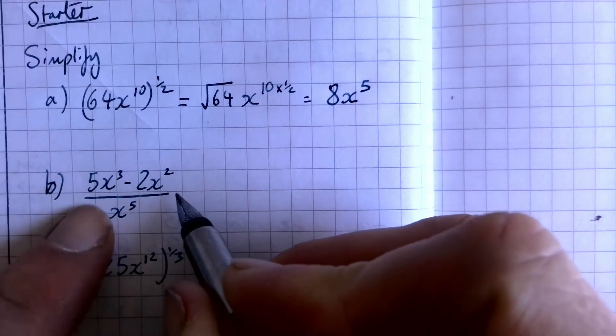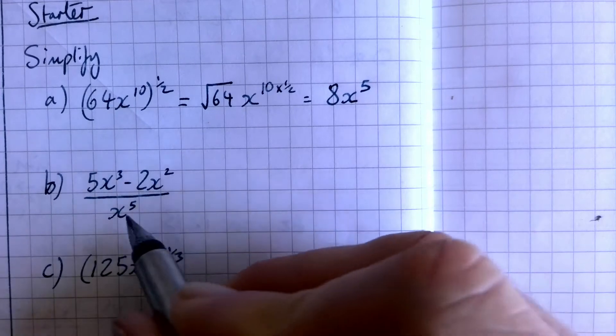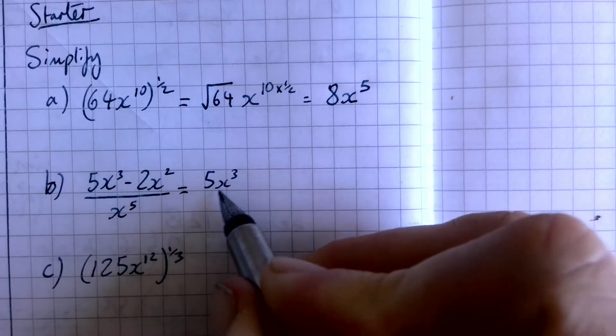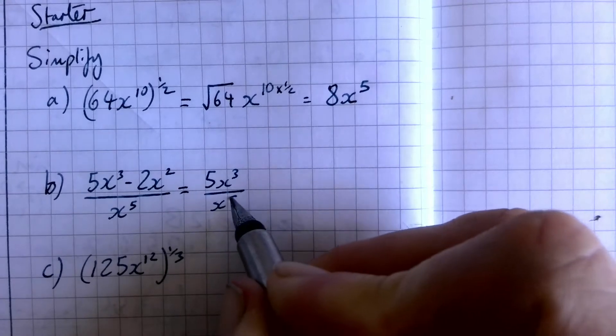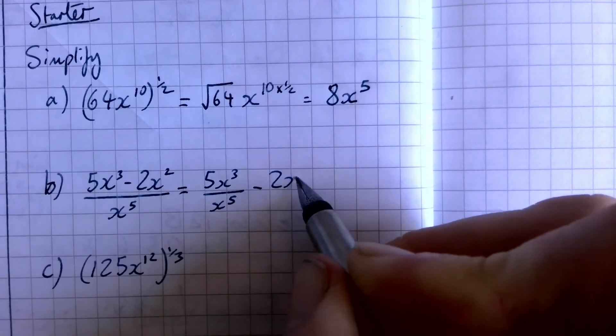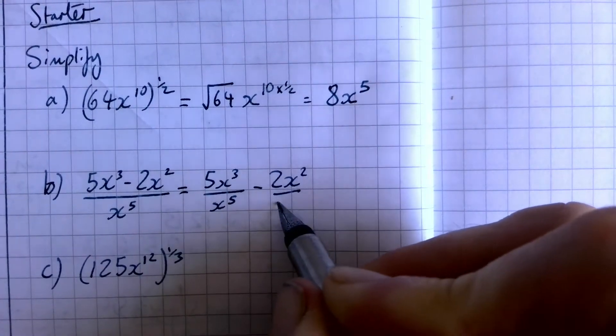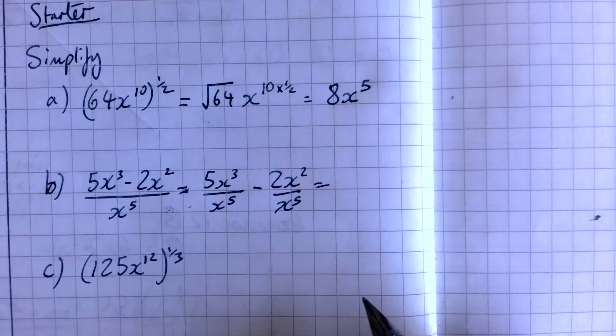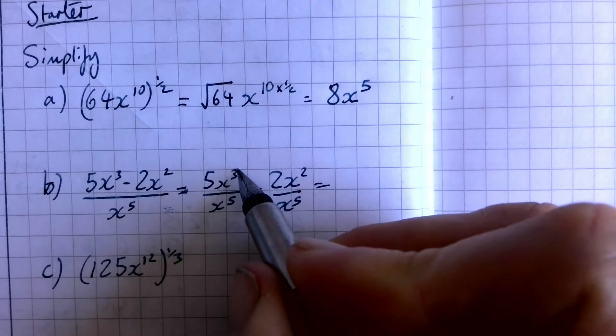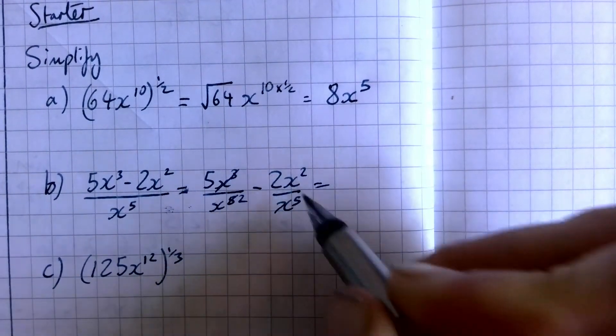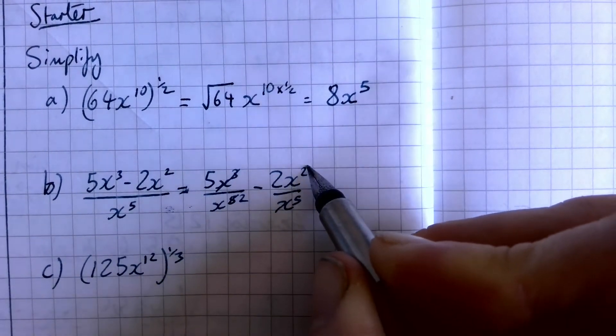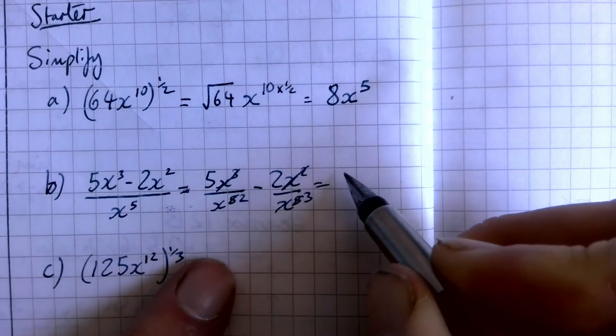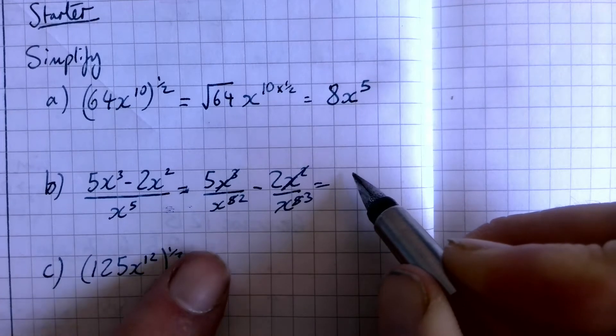Moving on to the second one, everything is being divided by x to the power of 5. At this point, I would split it into two fractions and do each one separately. When you divide x cubed by x to the power of 5, that's going to knock all of those out there and leave you with 2 underneath. Here, we're going to knock all of those out and leave you with 3 underneath. You can either leave it as a fraction, 5 over x squared.